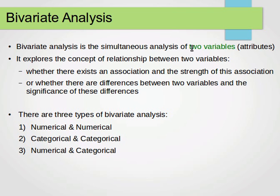Bivariate analysis is the simultaneous analysis of two variables or attributes. Before, we learned univariate analysis, which deals with variables one by one — the prefix 'uni' indicates that. The prefix 'bi' indicates we're processing two variables at the same time. It explores the concept of relationship between any two variables: whether there's association, how strong that association is, and if there's any difference, how significant that difference is.